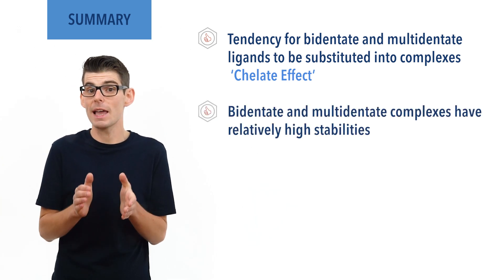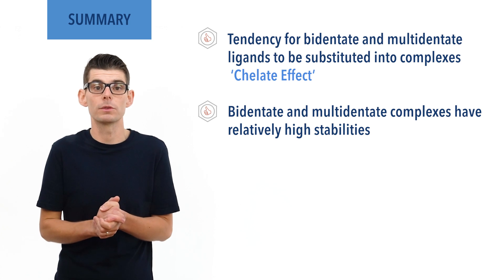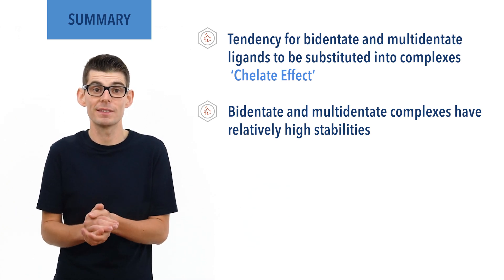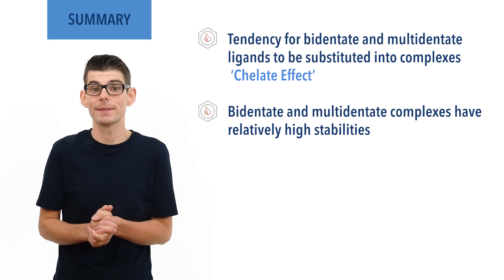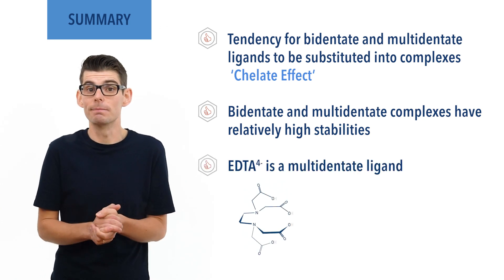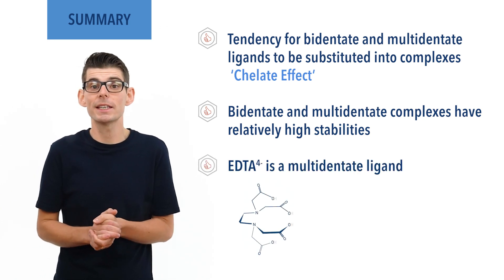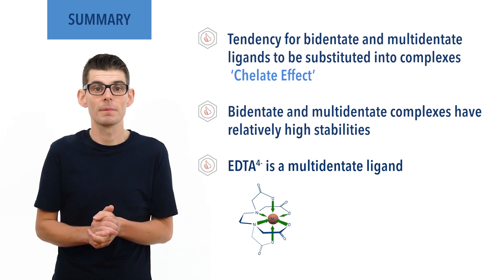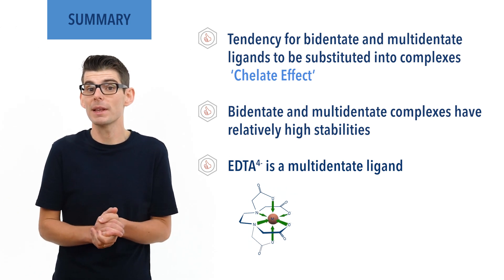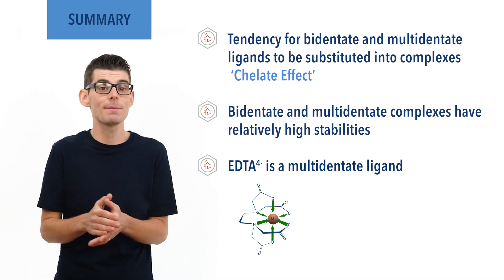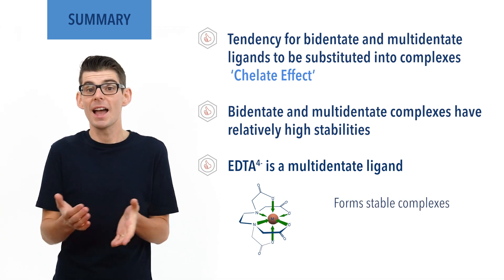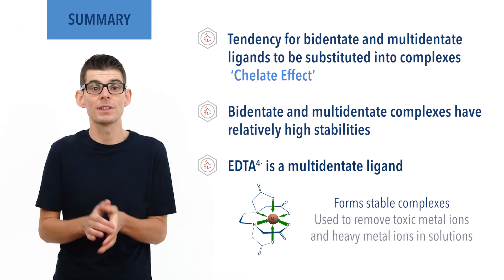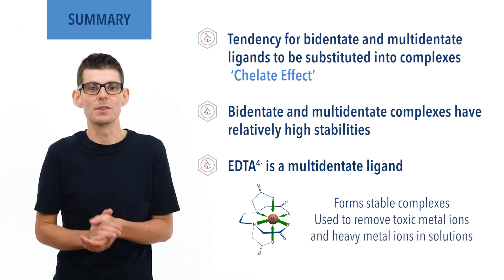Multidentate ligands that are able to form more than two coordinate bonds to a metal ion tend to form unreactive and stable complexes due to the chelate effect. EDTA is a multidentate ligand that can form six coordinate bonds to a metal ion. The chelate effect means complexes with EDTA are very stable and unreactive, and as a result, EDTA is used to help remove toxic metal ions and heavy metal ions from solutions.